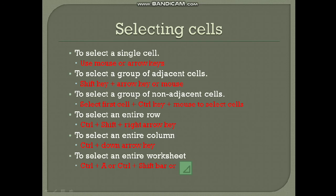Now let's move to the next slide. In this slide titled 'Selecting Cells,' the procedure is written in red. First, to select a single cell, you can use the mouse or the arrow key. Second, to select a group of adjacent cells, you will use the Shift keyboard key along with the arrow key.